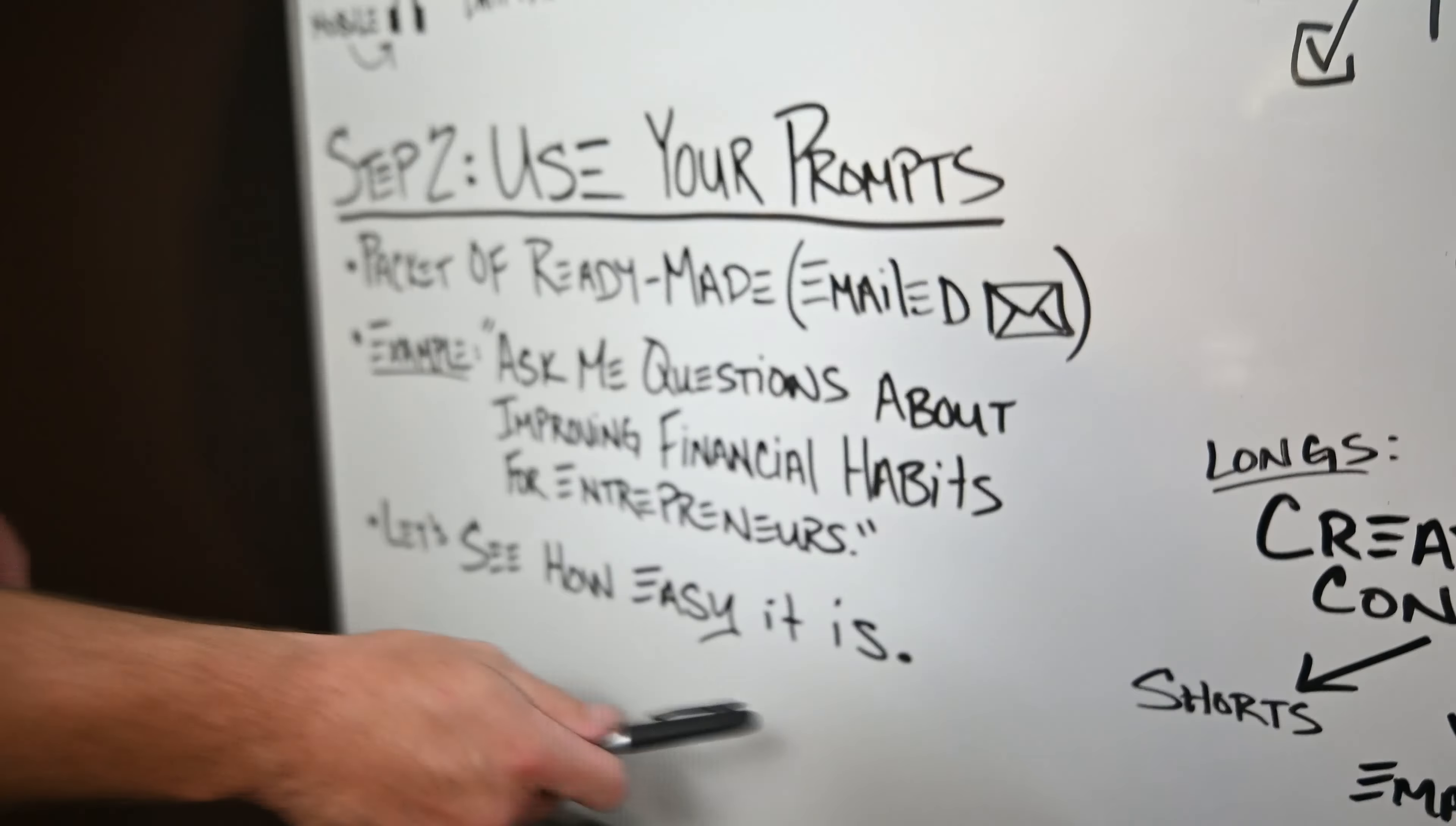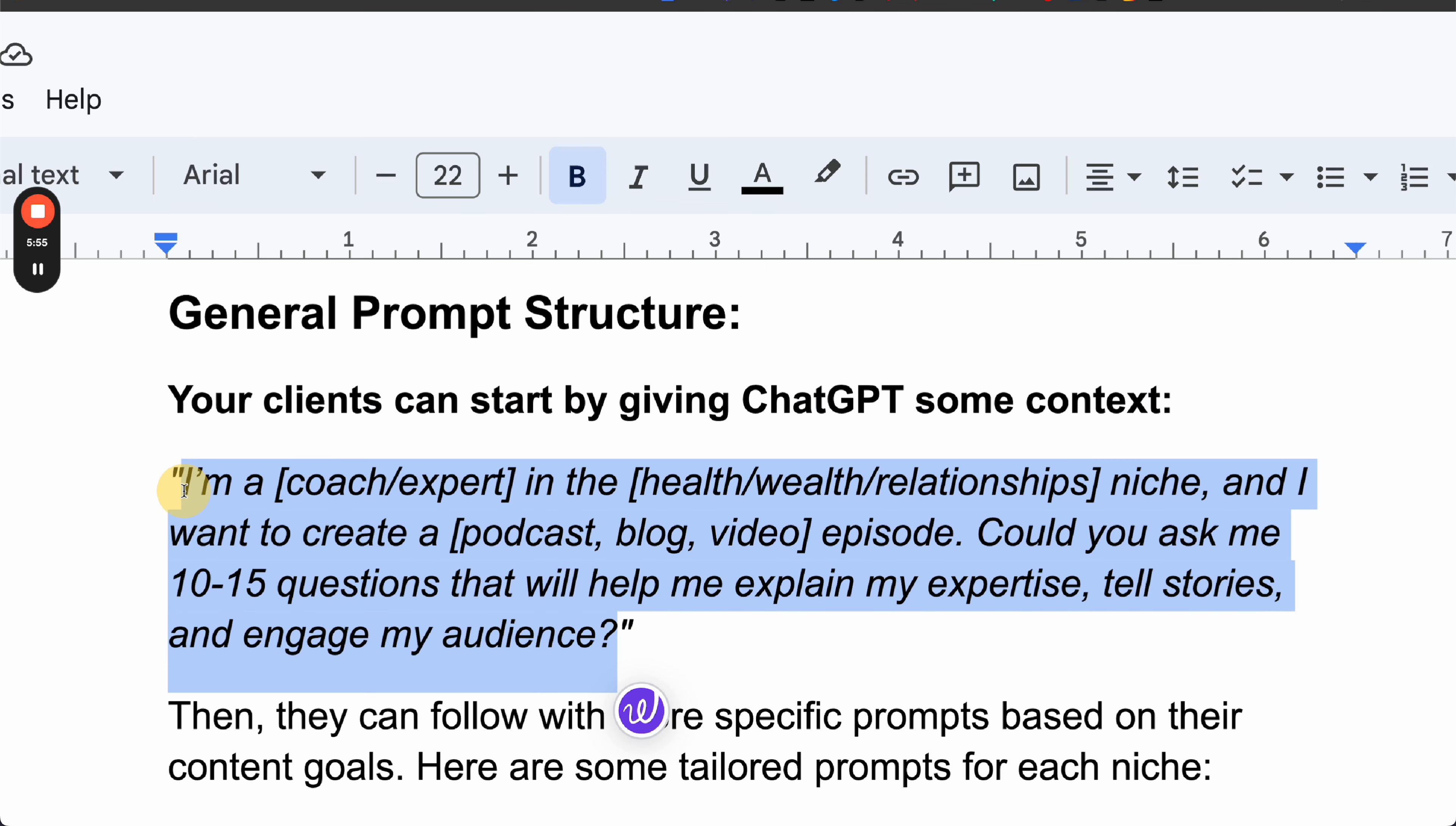Let's take a look at how easy this actually works. So here's this PDF that I gave you guys, it's down in the bottom. You literally would just take this and you would edit this piece: I am a—fill in who you are—in the—put the type of niche you're in—and I want to create a—whatever you want to create, episode or video—could you ask me ten to fifteen questions that will help me explain my expertise, tell stories, and engage my audience? Pretty damn good, right? You literally take this here, just copy it, you can go to ChatGPT and I'll fill it in here real quick. I would say I'm an online course creation coach, and I'm in the how to sell courses instead of done-for-you services niche, and then I want it to create a YouTube video.